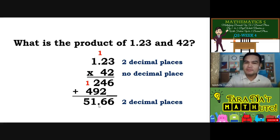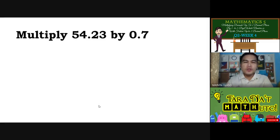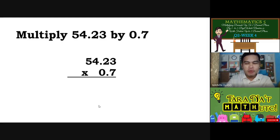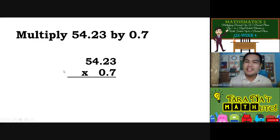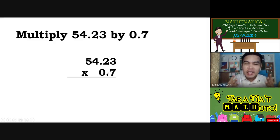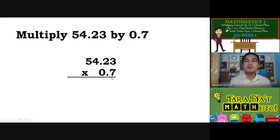Let's have the second example. What if you are going to multiply 54 and 23 hundredths by 7 tenths? This example is an example of multiplying both decimal numbers. First factor: 2 decimal places. Second factor: 1 decimal place. Again, you are just like multiplying a whole number — ignore the decimal point. Just multiply 5,423 times 7 as a whole number. You can pause this and try it so you can check your answer.